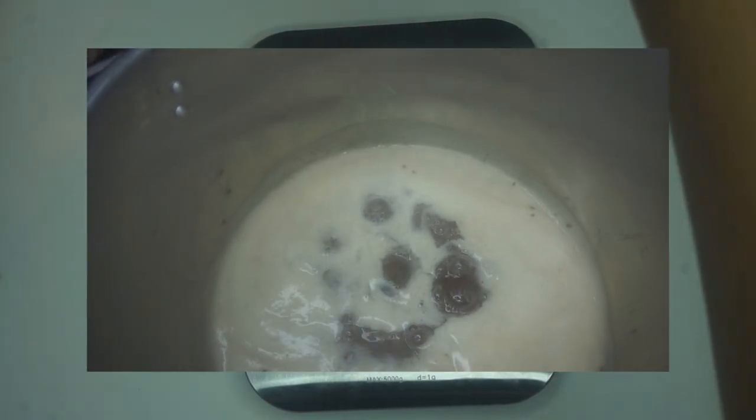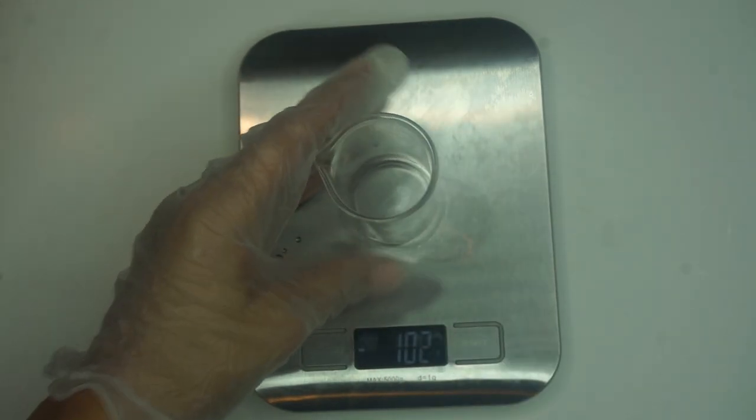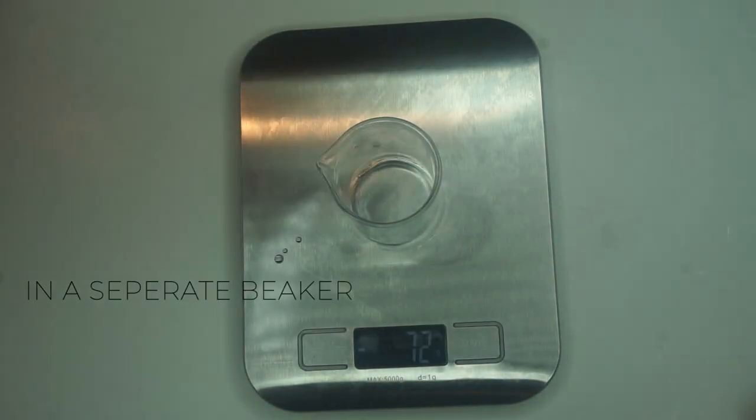Before we move on, we're just going to check the flax seeds one more time and you'll start to see this thick, foamy substance on the top of the flaxseed gel. This means that it's almost time to pull it off the heat and start to strain it.